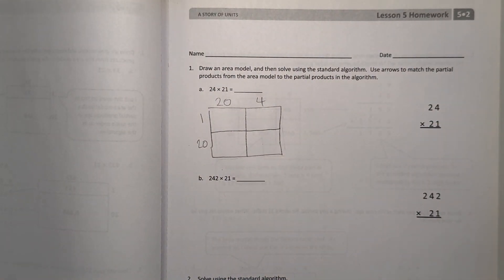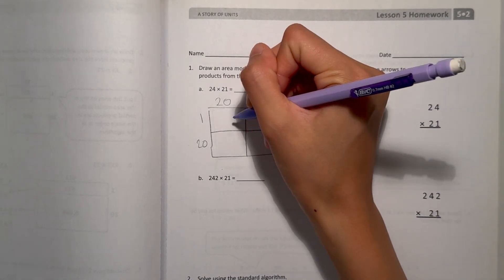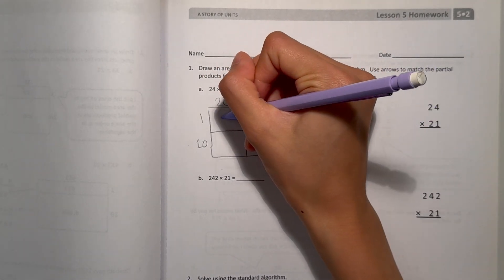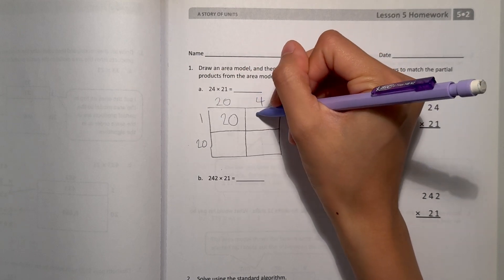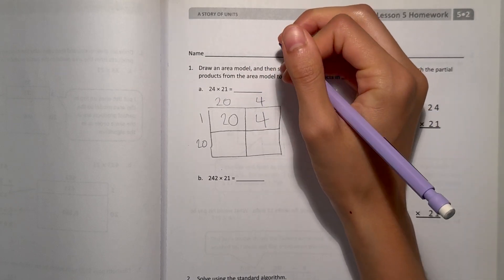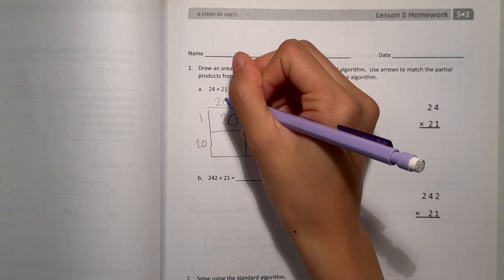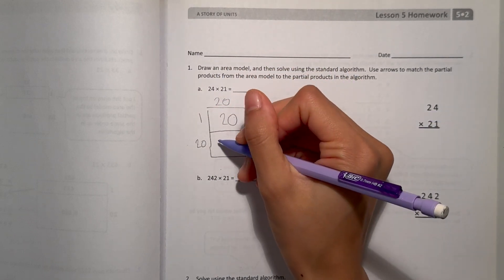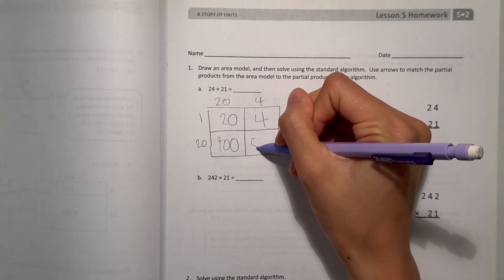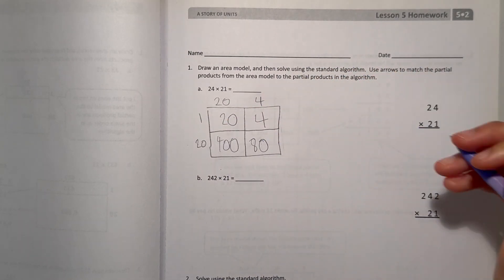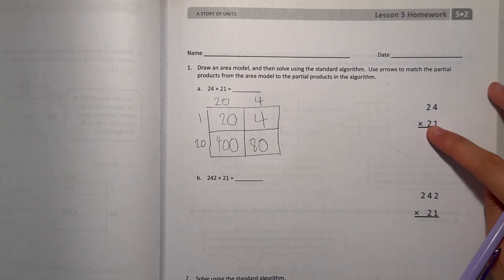So now I multiply. For this box, we have 1 times 20, and that is 20. And here we have 1 times 4, and that is 4. 20 times 20, well 2 times 2 is 4, and add the zeros. And 20 times 4 is 8, and add the zeros.